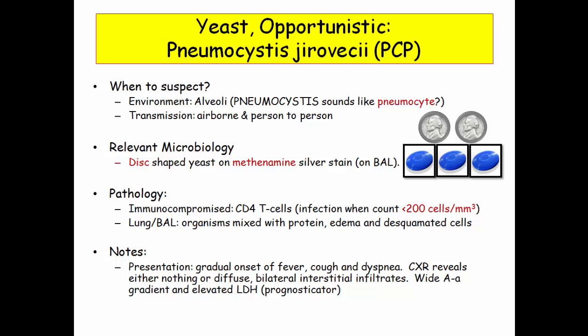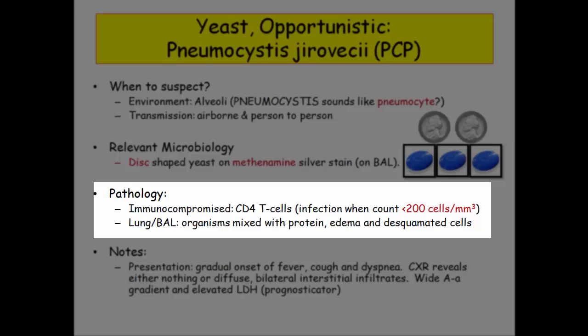Pneumocystis is described as a disc-shaped organism, and histopathology is confirmed by staining with methenamine silver stain. Other morphologic descriptions include frisbee-shaped or the least useful description of crushed ping-pong balls. Infection will be described in the immunocompromised patient. The other challenging question is where you will find it on pathologic specimens — so let's think about it.